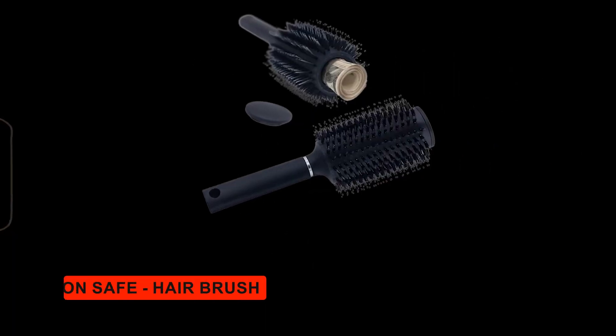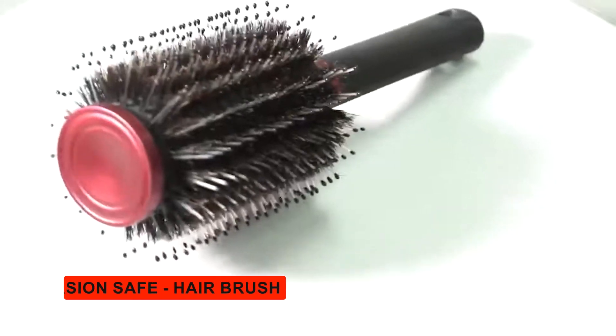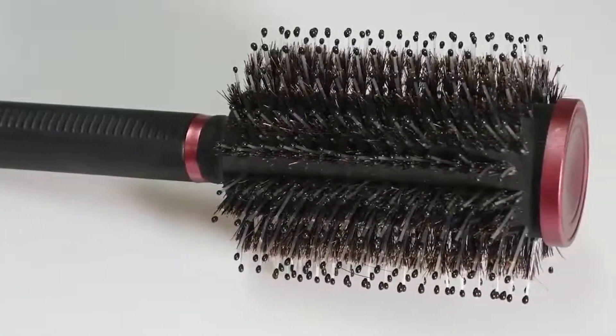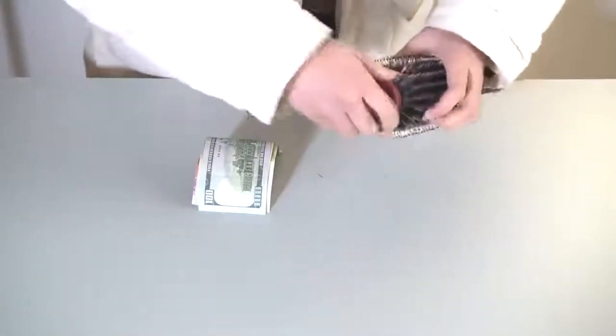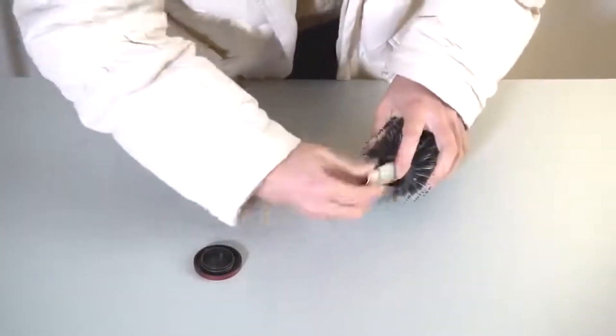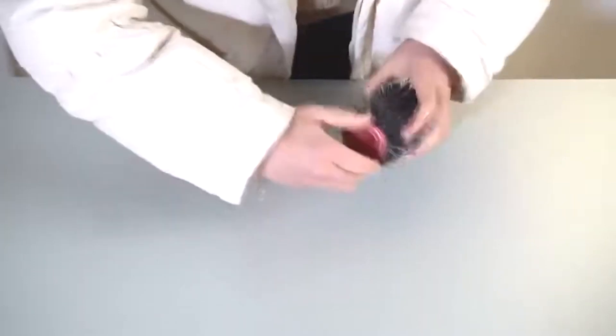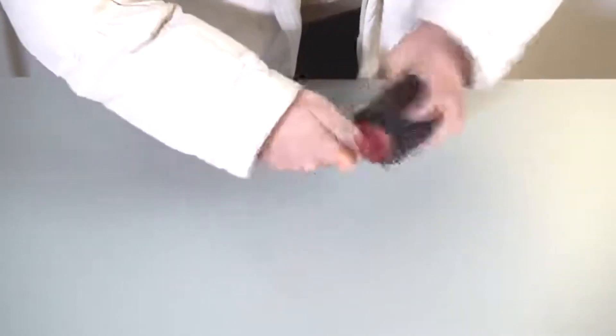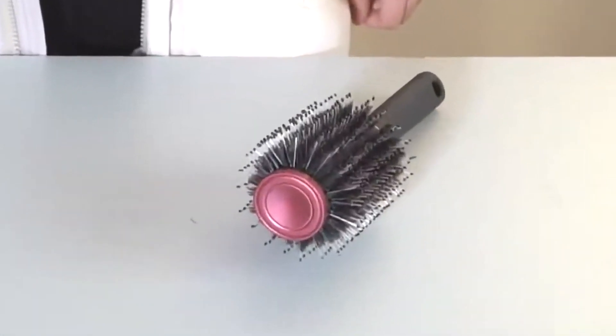Diversion Safe Hairbrush by Stash-It. This hairbrush not only styles your hair, but also serves as a safe for hiding money, jewelry, or other small valuables. It's a perfect way to keep items hidden in plain sight while traveling or at home.